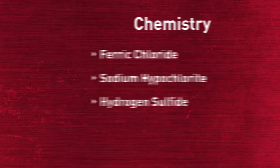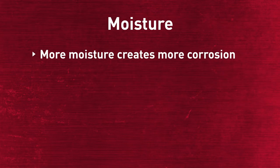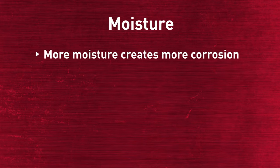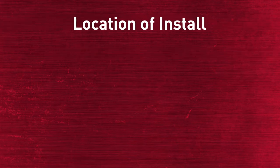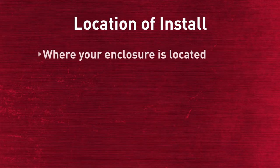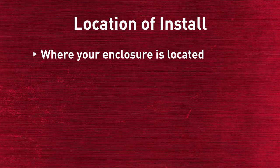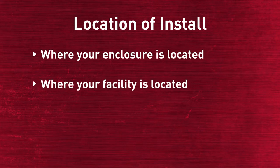Similar to temperature, moisture is another nuisance — the more moisture there is in the environment, the more it's going to corrode. Finally, looking at the location of install: where it's located in your plant or in your process, as well as the location of your facility itself, can play a role in how quickly your equipment corrodes.